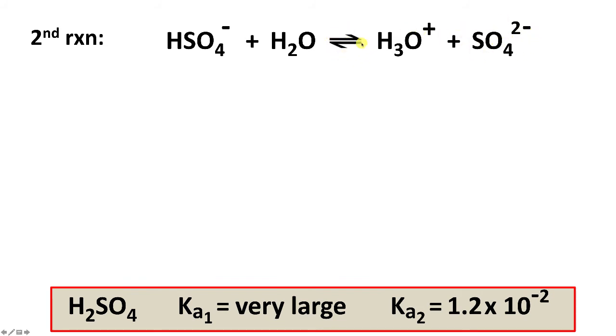And now our initial for step two or dissociation two are actually the concentrations that we determined from the first dissociation. So HSO4 is 0.1 molar.